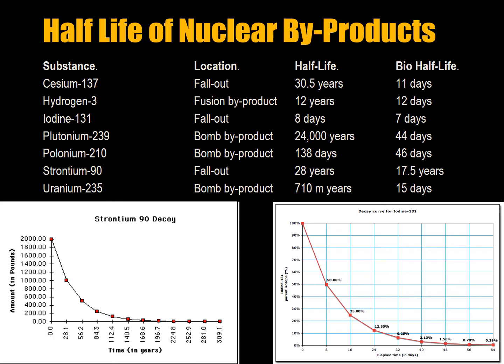Uranium-235 has a 710-million-year half-life — incredibly stable — with a bio-half-life of 15 days. Strontium and iodine are probably biologically the most dangerous isotopes to get into your system.